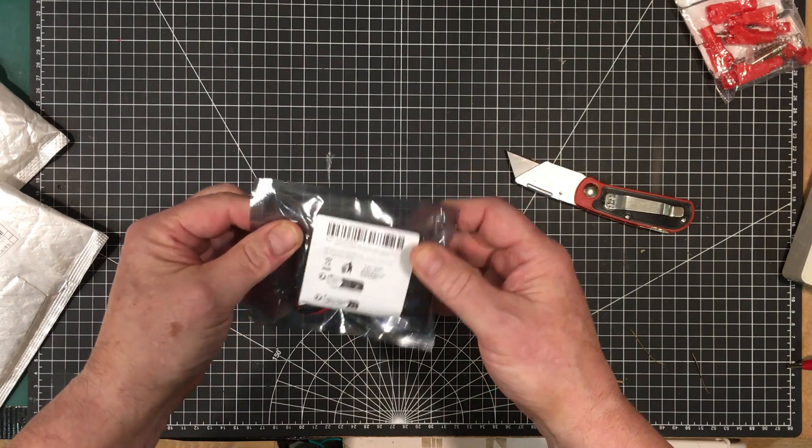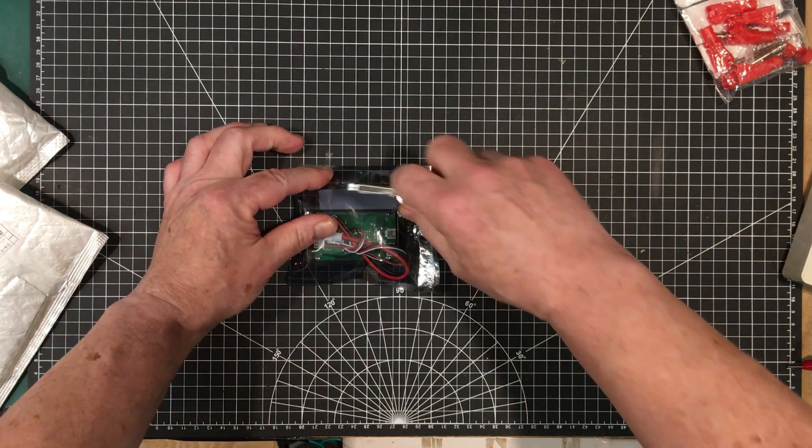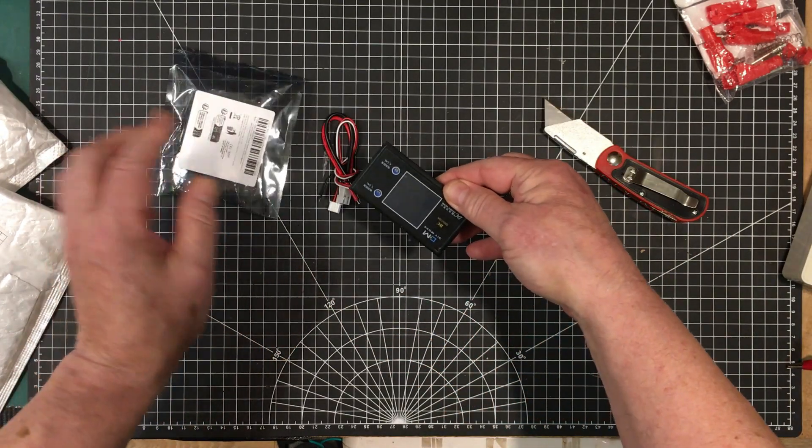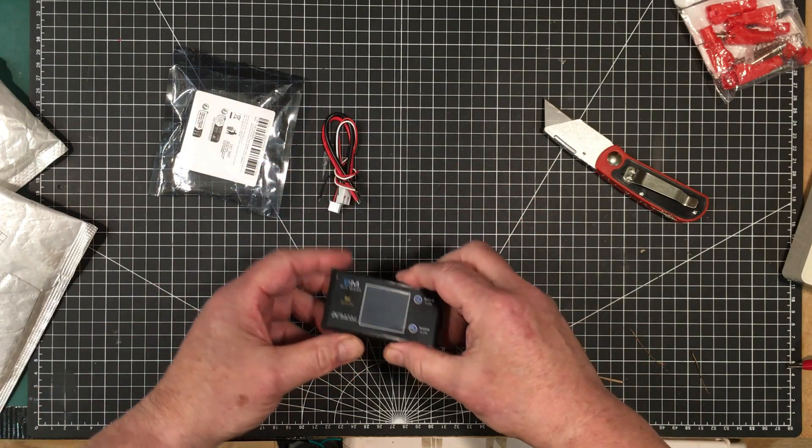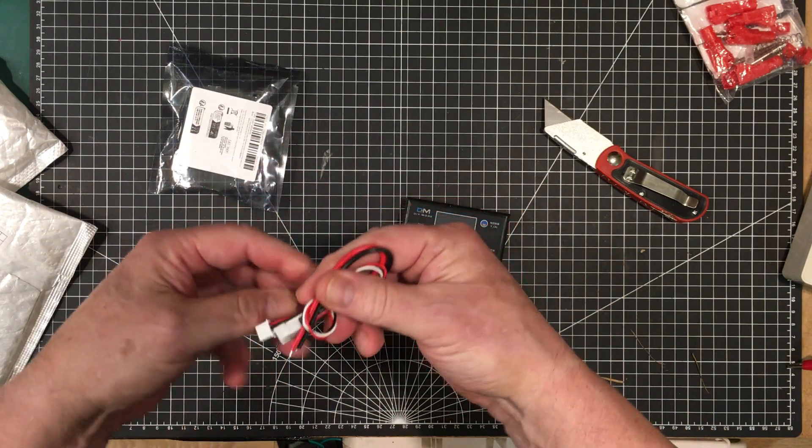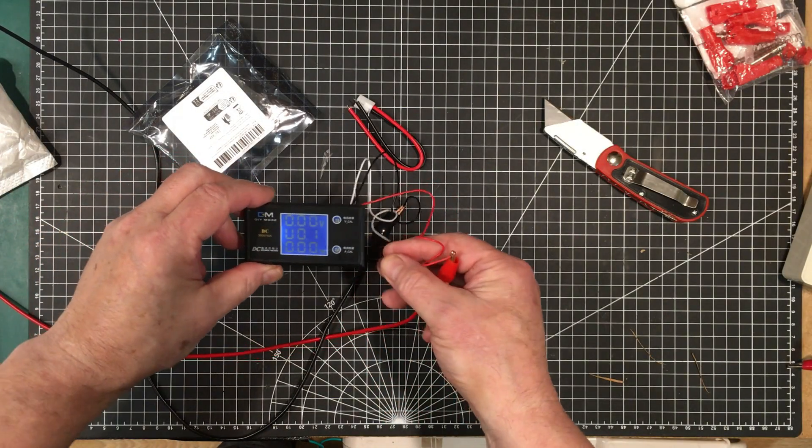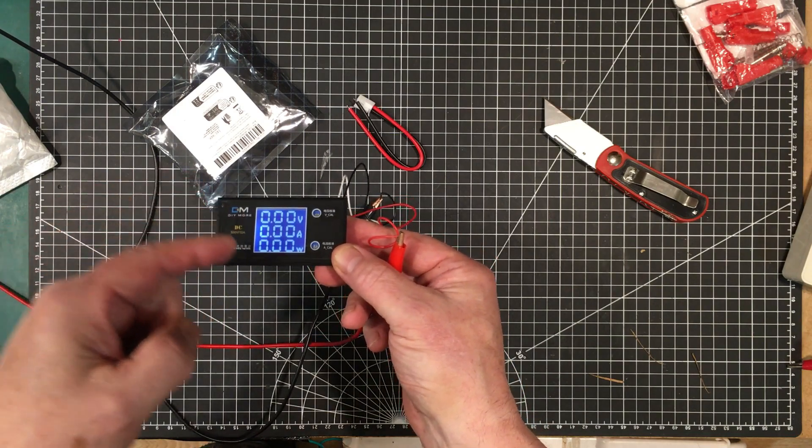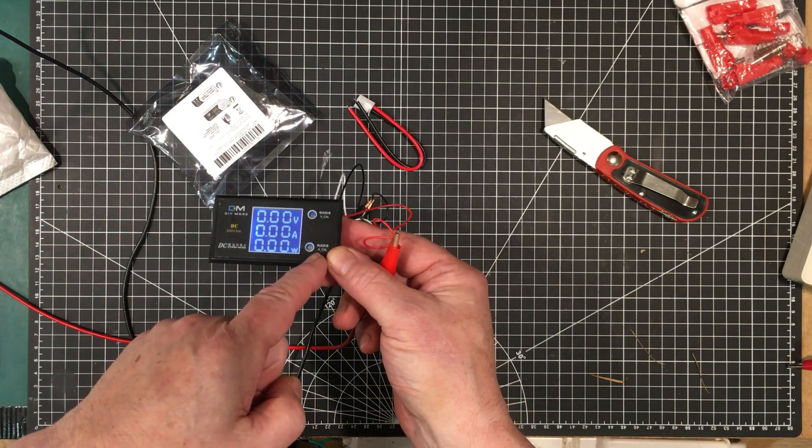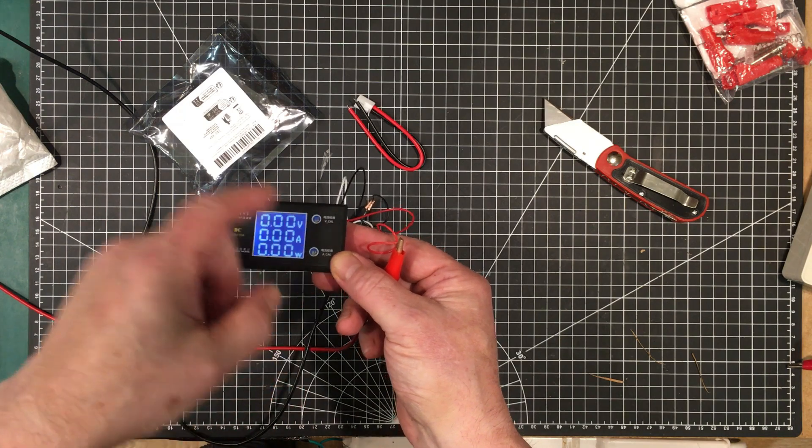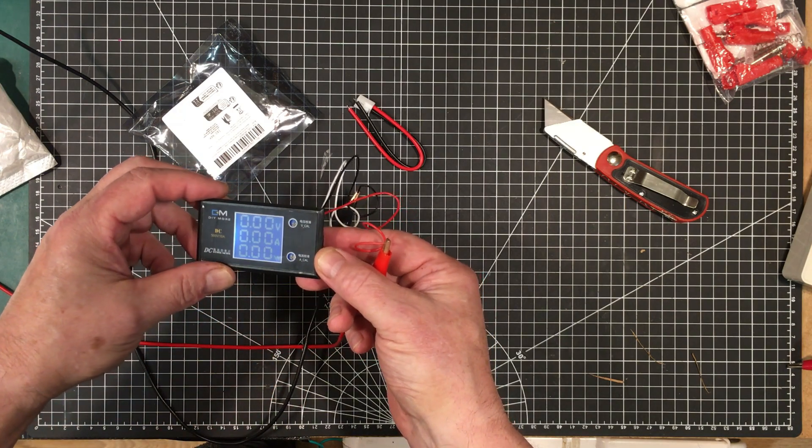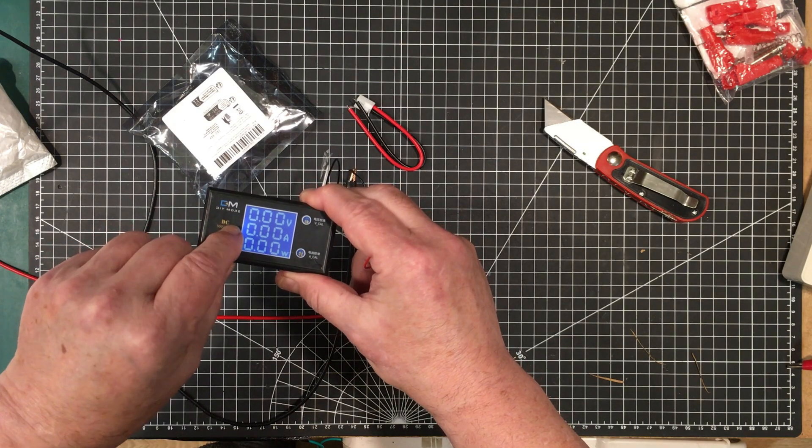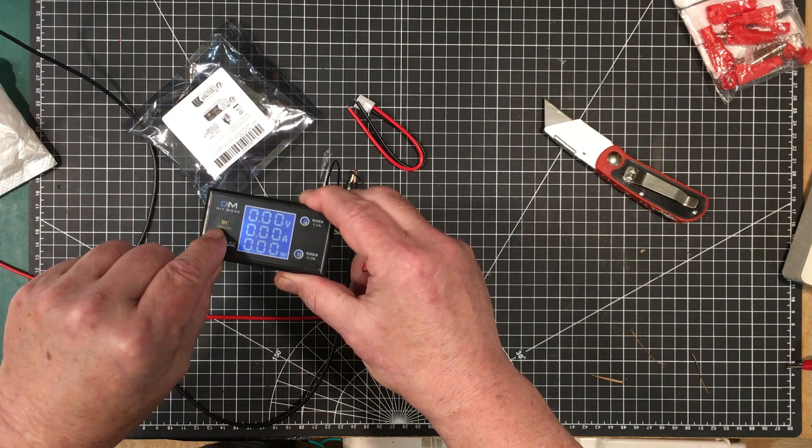And here is the meter that I'm thinking of using in the power supply. Now this one is an LCD meter. I wonder if I can show it to you here. Let me see if I can put some power on it. So there's the display. It's got voltage, current, and power. And it's got calibration for both the amperage and the voltage so we can get it set up nicely. So I think this is the meter I'm going to be using DIY more.